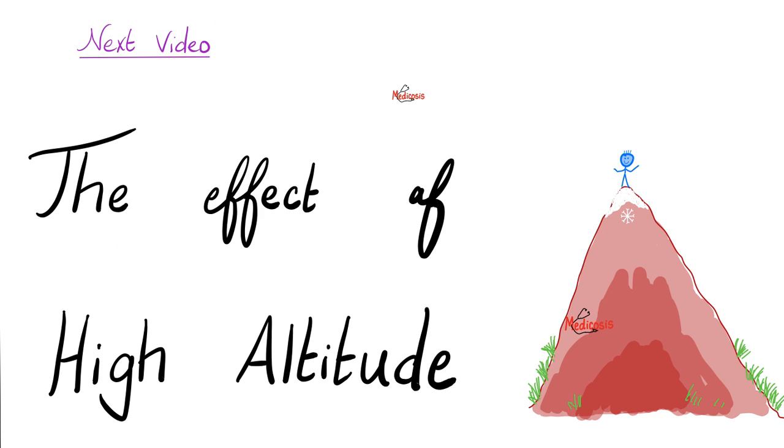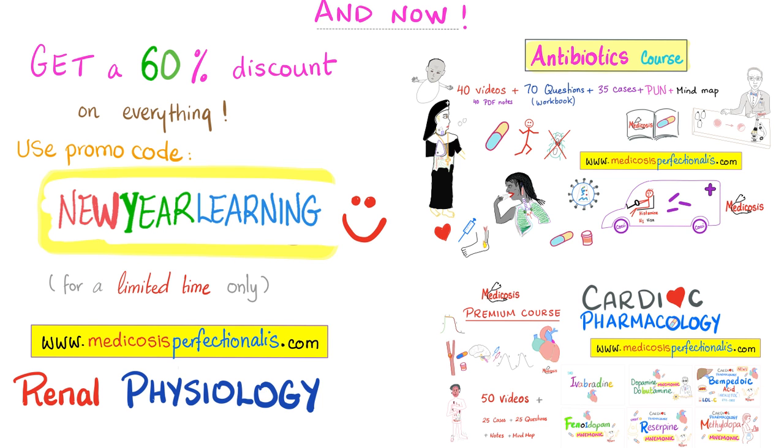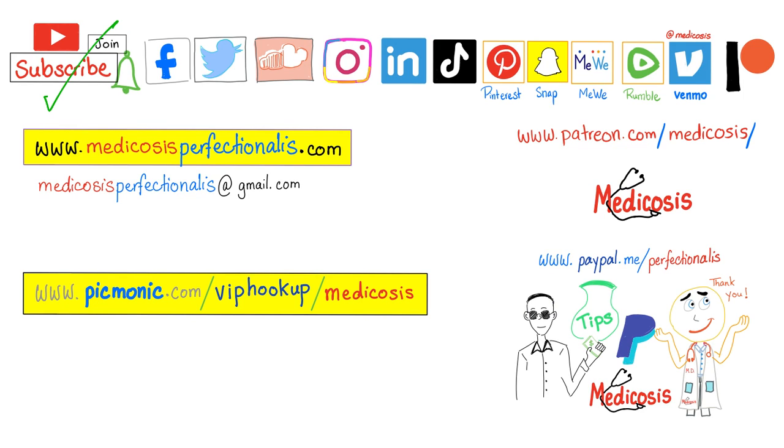Coming up next, the effect of high altitude on your body. If you want to take it to the next level, check out my acid-base imbalance course on my website, medicosisperfectionalis.com. 30 videos with notes, of course. 8 gigabytes of content. You can download it today. You can crush this year and get a 60% discount towards any product on my website. Just use discount code NEWYEARLEARNING at checkout. Thank you for watching. Please subscribe, hit the bell, and click on the join button. You can support me here or here. Go to my website, download my courses. Be safe, stay happy, study hard. This is Medicosis Perfectionalis. This is where medicine makes perfect sense. Peace.